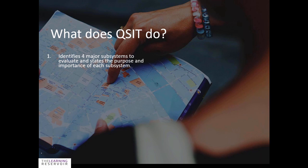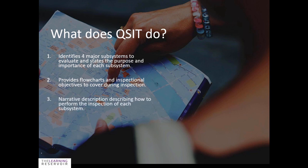What does QSIT do? Well, it's a guide for the inspector. In this slide here we can see the map — it's giving inspectors a guide on how to do an inspection of the quality system of a medical device company. It identifies four major subsystems to evaluate and states the purpose and importance of each subsystem. It provides flowcharts within the QSIT document and inspectional objectives to cover during the inspection. It provides narrative descriptions describing how to perform the inspection of each subsystem, and it provides tables for statistical sampling of records for review. All of that is in the QSIT.